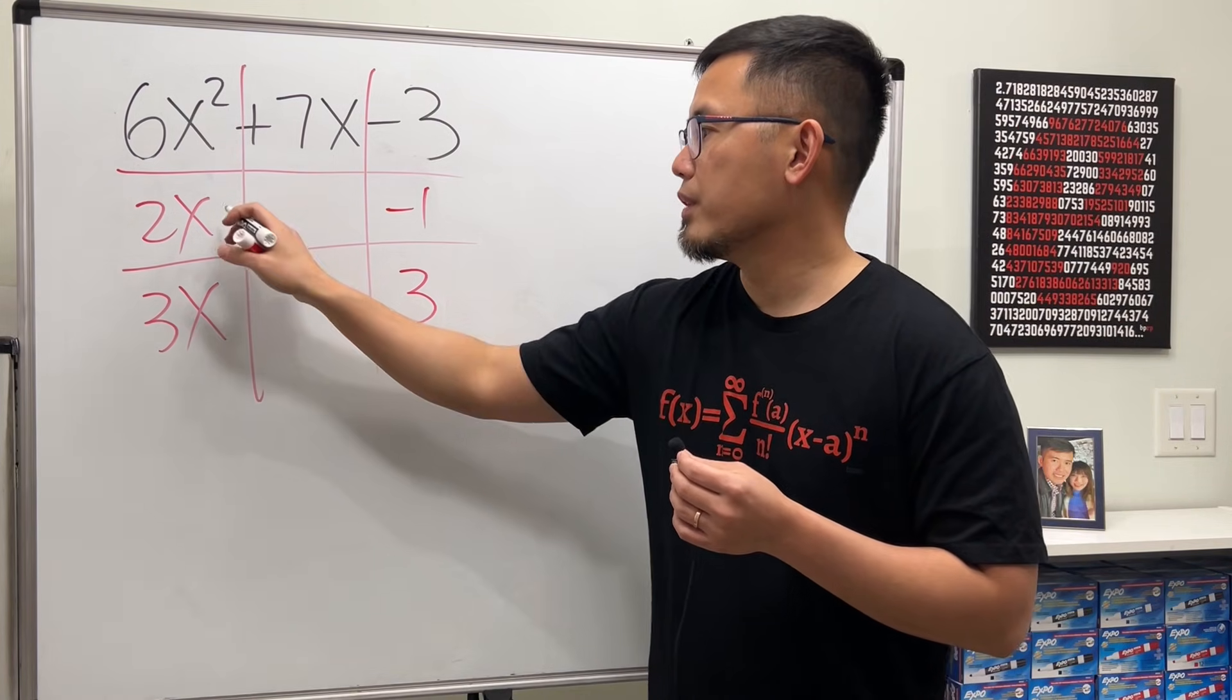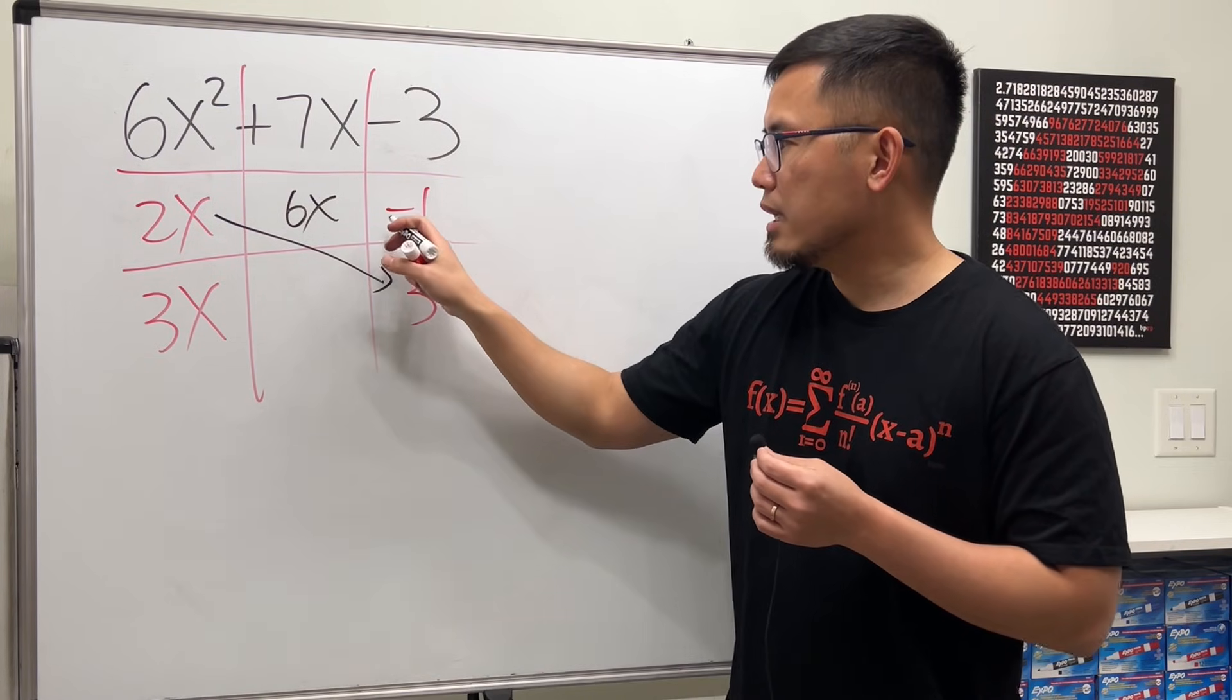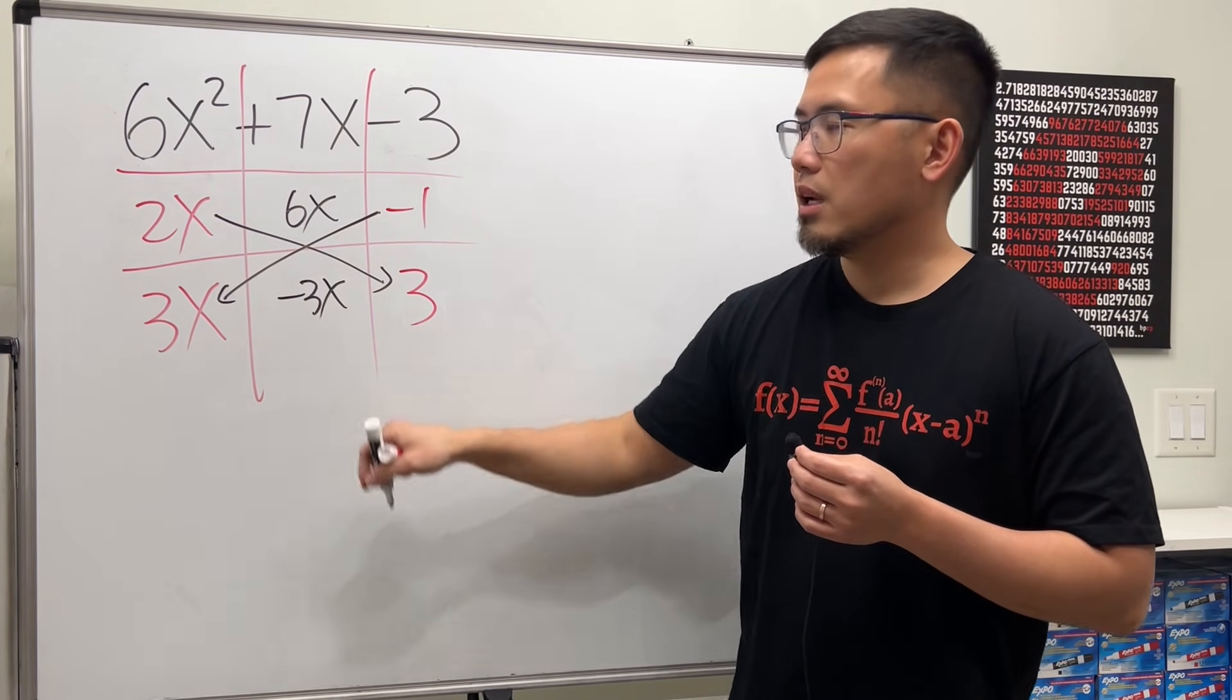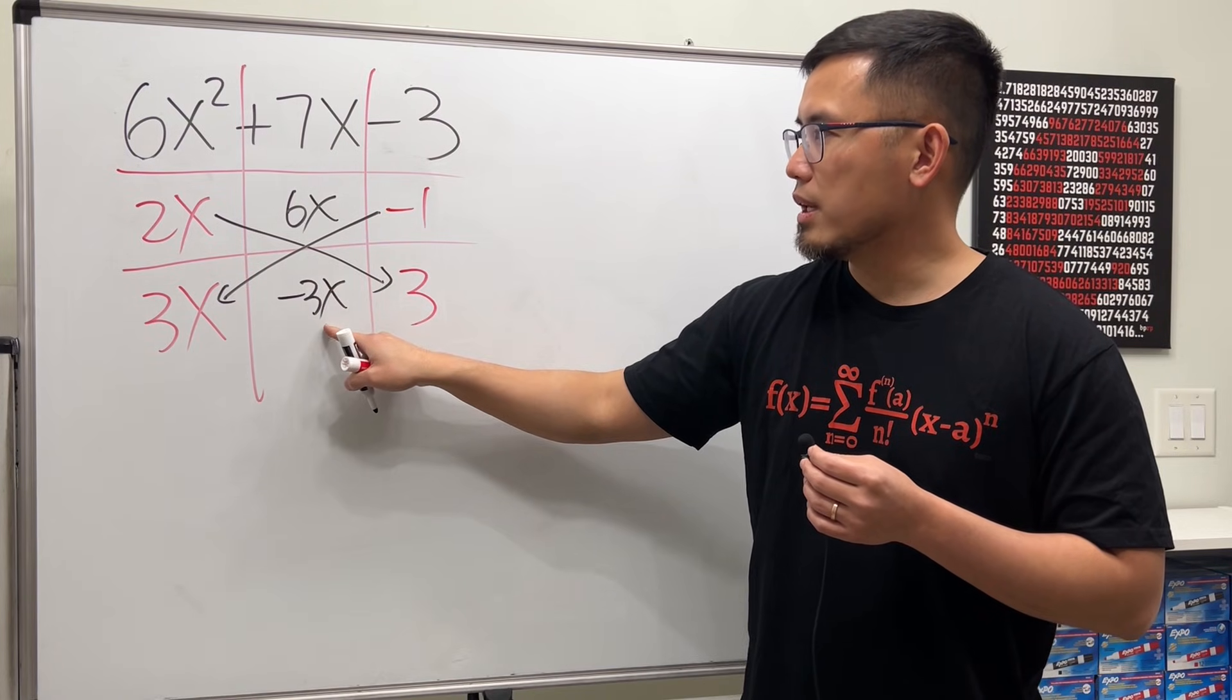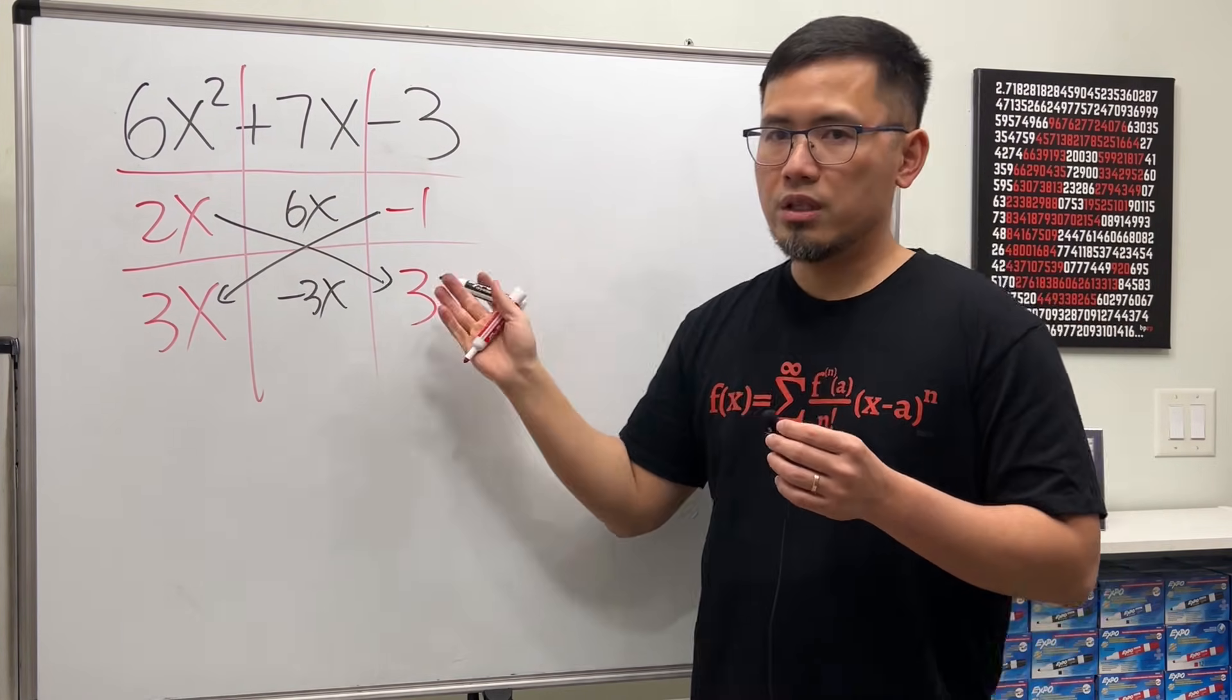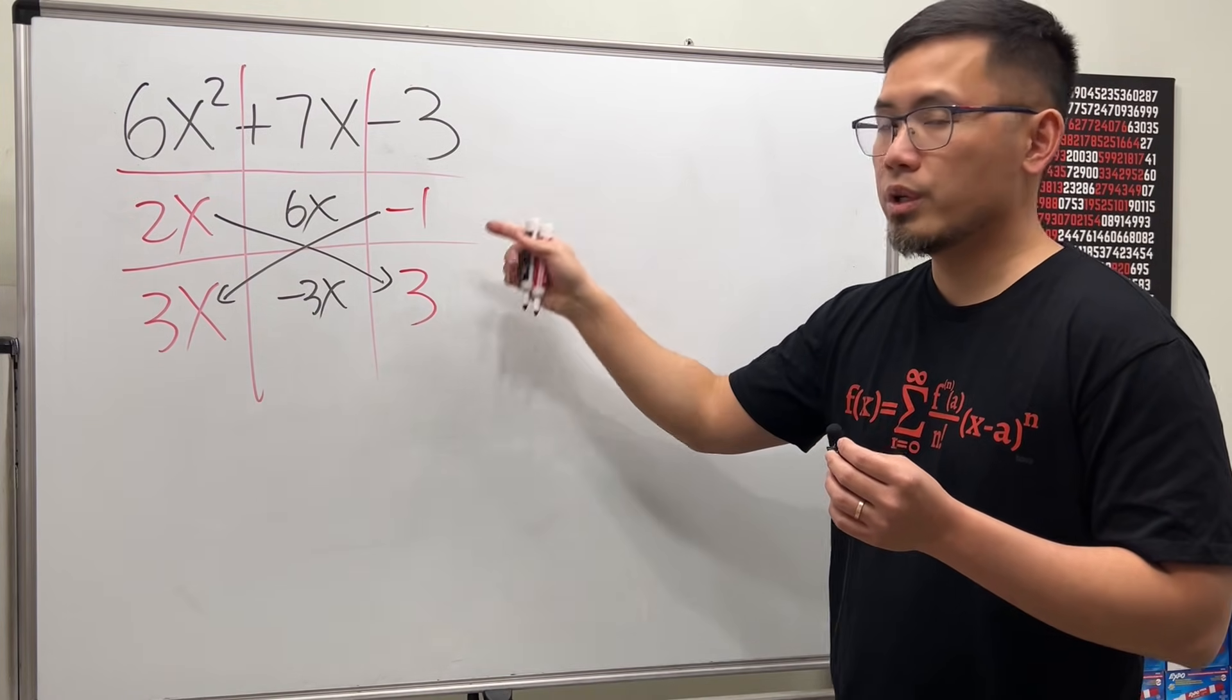This is the check. You take this times that, you put it here: 6x. And, then, you take this, multiply by that, you get negative 3x. 6x minus 3x, do we get 7x? No. In that case, that means we didn't get the correct combination. So, what that means is, don't worry, just try again.